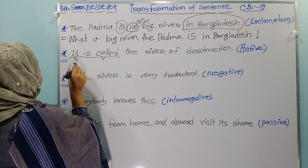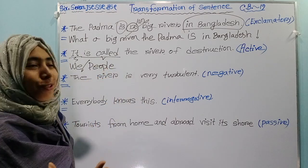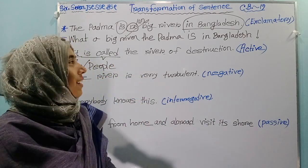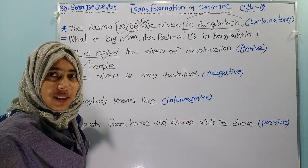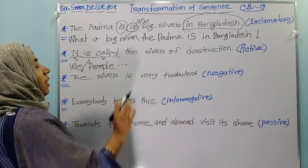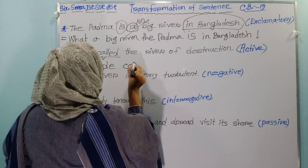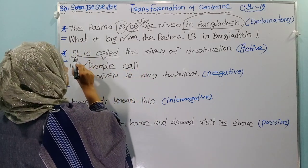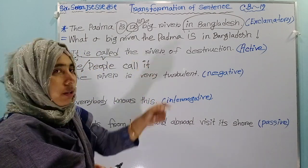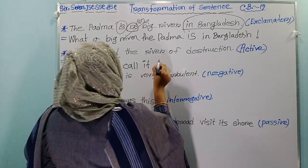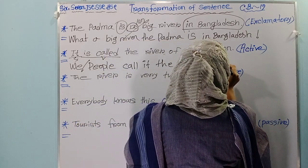You will start from 'we' or 'people' — or you can use 'people of Bangladesh.' After that, you will give your main verb. As this is present indefinite tense, there will not be any auxiliary verb. So you will write: 'We call it the river of destruction.' The original subject 'it' becomes the object here. Call it — call it the river of destruction.